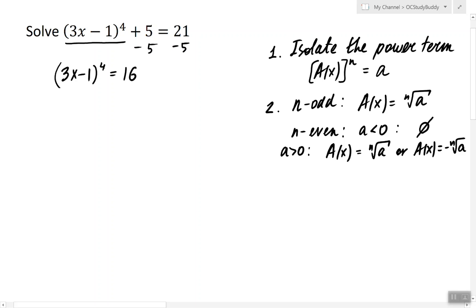Now we notice that 4 is even and the number on the right side is positive. That means we can continue solving this equation by using the property of the even radical.